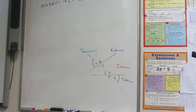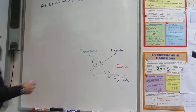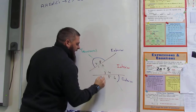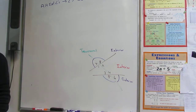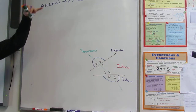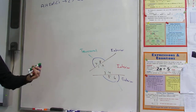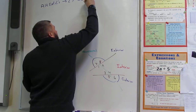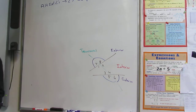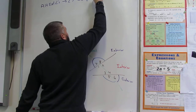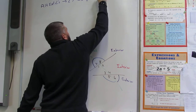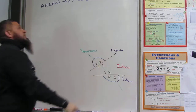Is there another one? You notice that there's five and eight — they are also exterior and they're on either side of the transversal. So, angle five and angle eight.